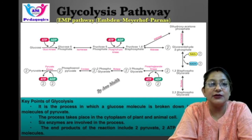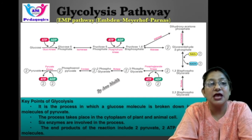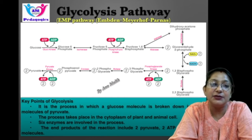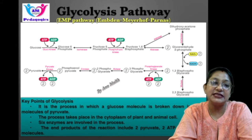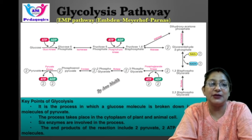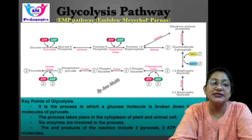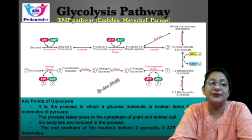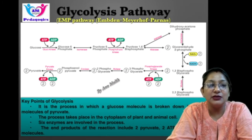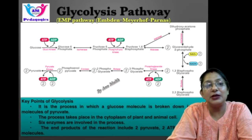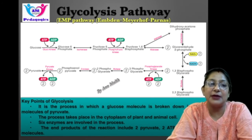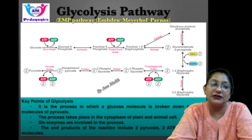Glycolysis is a process of glucose breakdown to produce energy. It produces two molecules of pyruvate, ATP, NADH, and water. The process takes place in the cytosol of the cell cytoplasm; it can occur in the presence or absence of oxygen. Glycolysis is the primary step of cellular respiration. When oxygen is absent, cells obtain small amounts of ATP through fermentation. This metabolic pathway was discovered by three German biochemists — Embden, Meyerhoff, and Parnas — and is also known as the EMP pathway.